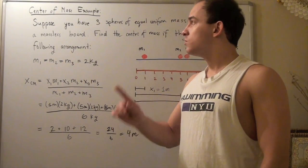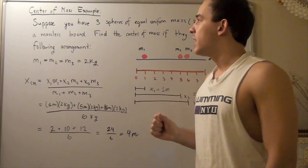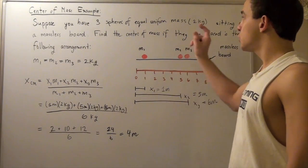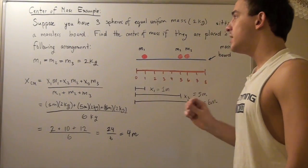In this example, we're going to try to find the center of mass of our system. Suppose you have three spheres of equal uniform mass of two kilograms sitting on a massless board that's eight meters long.